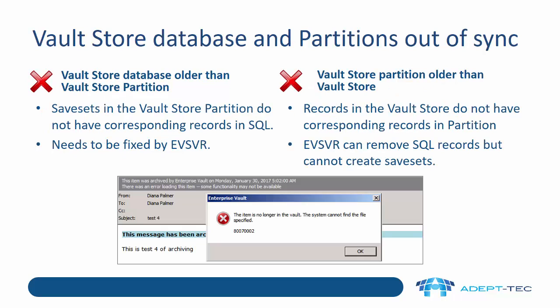So what happens when the Vault Store database and the partitions are out of sync? This is quite a common scenario if you're recovering SQL or recovering the Vault Store partition. If the Vault Store database is older than the Vault Store partition, that means there are save sets in the Vault Store partition that don't have corresponding records in SQL — that can be fixed by EVSVR. We can rebuild those records in SQL from the information in the Vault Store partition or from the actual archived items. However, if the Vault Store partition is older than the Vault Store database, then records in the Vault Store do not have corresponding items in the partition. In this case there's no way we can recreate those archived items. All we can do is use EVSVR to remove the orphaned SQL records, but we can't create save sets.